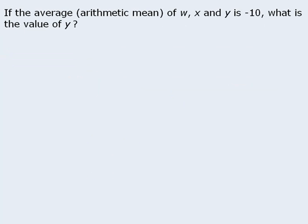Let's try a few more of these. Here we are told that the average of three numbers is negative 10, and we want to find the value of Y. If the average of three numbers is negative 10, we could say that the sum of the three numbers divided by 3 is equal to negative 10. Or, if we multiply both sides of this equation by 3, we could say that the sum of the three numbers is equal to negative 30. Since the target question asks us to find the value of Y, we have neatly summarized all of the relevant information and are ready to examine the statements.